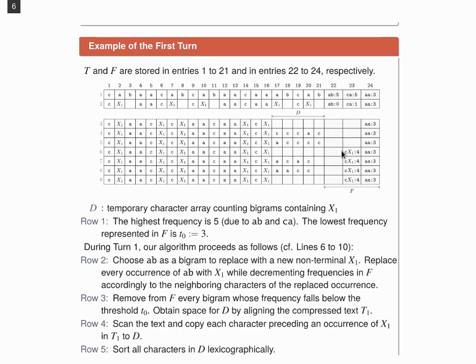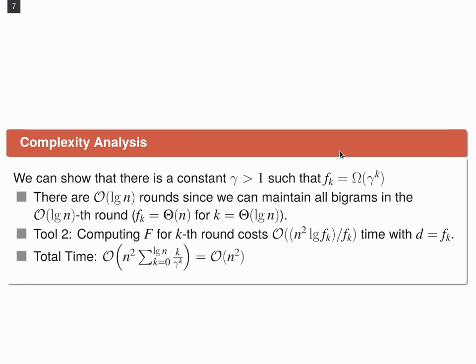Now, let's have a look at the time complexity. We can show that there is a constant gamma larger than 1, such that fk, so the number of bigrams we can store, is omega gamma to the power of k. Consequently, there are roughly at most log n rounds, since we can maintain all bigrams, at least in the order log nth round. And that's because when k is roughly about log n, fk is already roughly n.